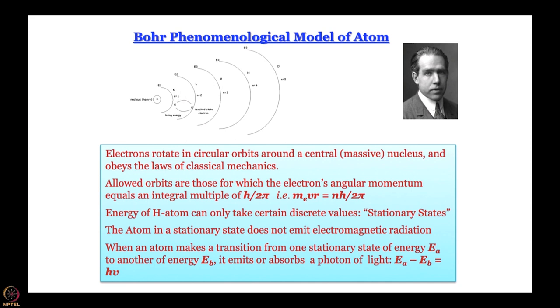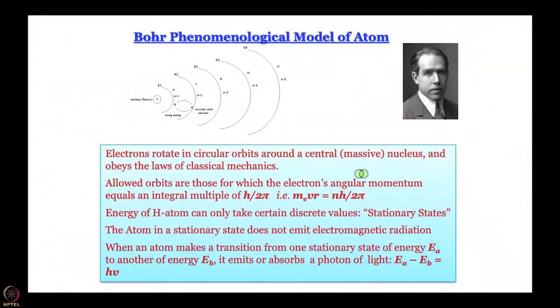Why is it there? Later on, when we get into the wave nature, one can find a justification of why mvr has to be an integral multiple of h/2π, because that is the only condition that leads to constructive interference of the waves. But let that be the story for another day. Using this, we said that the electron cannot reside in any space in between — mvr = nħ are the only r values that are allowed.